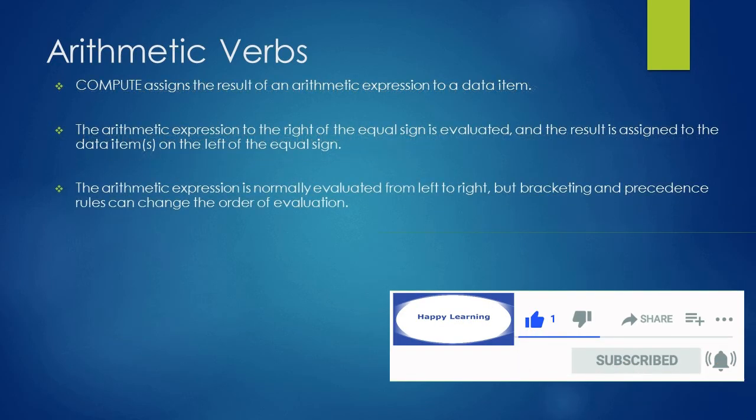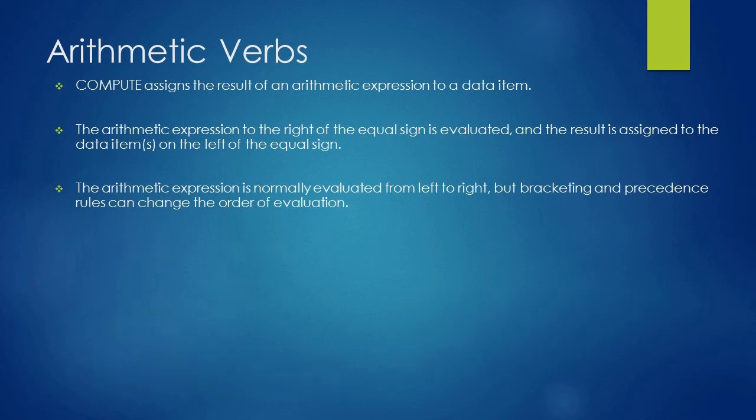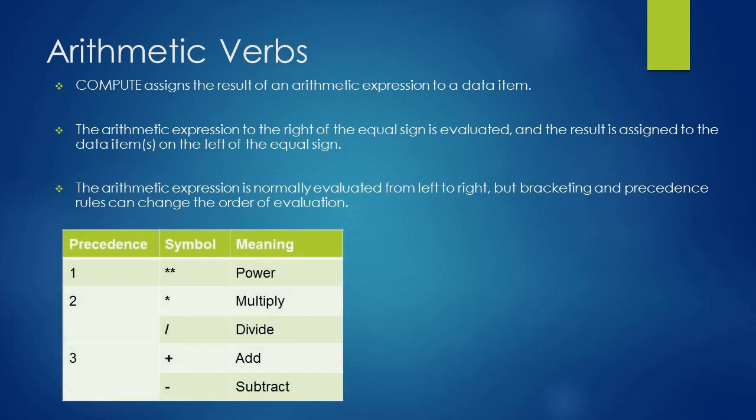The arithmetic expression is normally evaluated from left to right, but bracketing and precedence rules can change the order of evaluation. Here is a table about the order of the precedence of the symbols.